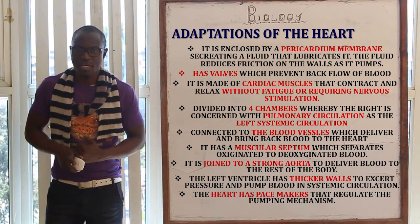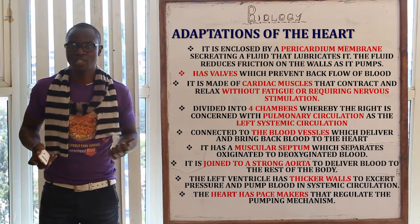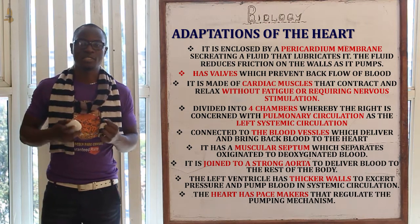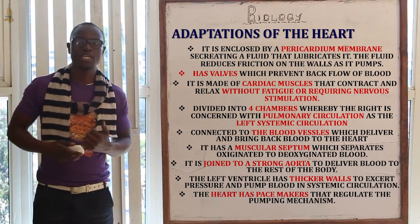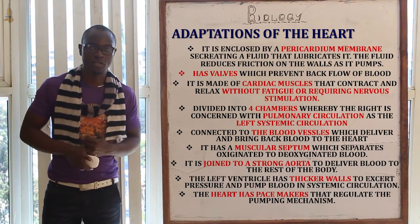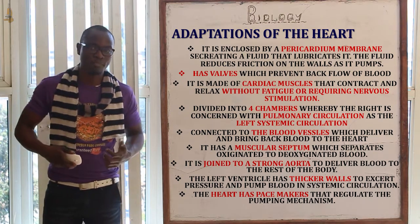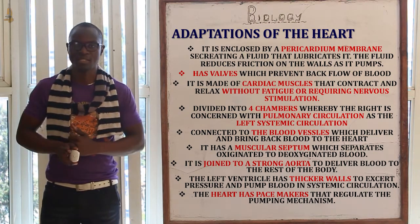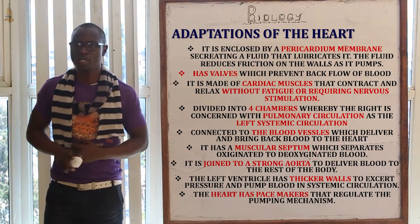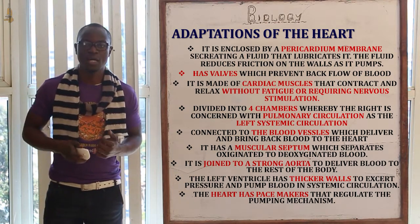The heart has a very strong left ventricle. Why is the left ventricle thicker than the right ventricle? This is because it must pump blood to the rest of the body and then back to the heart. The right ventricle is only concerned with pumping blood to the lungs and back, while the left ventricle pumps blood to the rest of the body — that is why it is very strong and very thick.